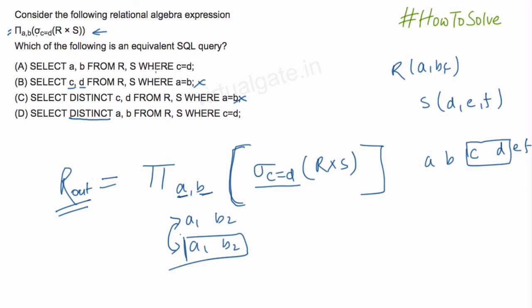But in SQL, if you run the query, you can get duplicate rows. So it will return distinct value only after you use this distinct keyword. So this fourth option, that is this D option, will be equivalent to this algebraic expression.